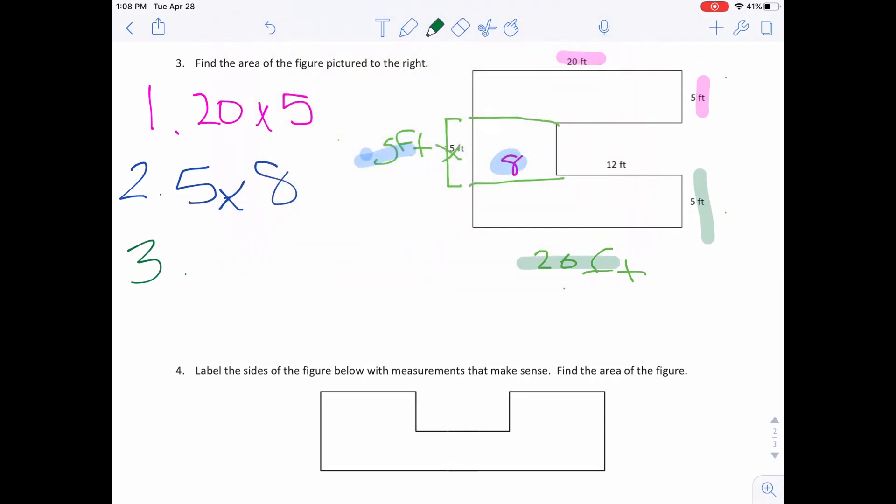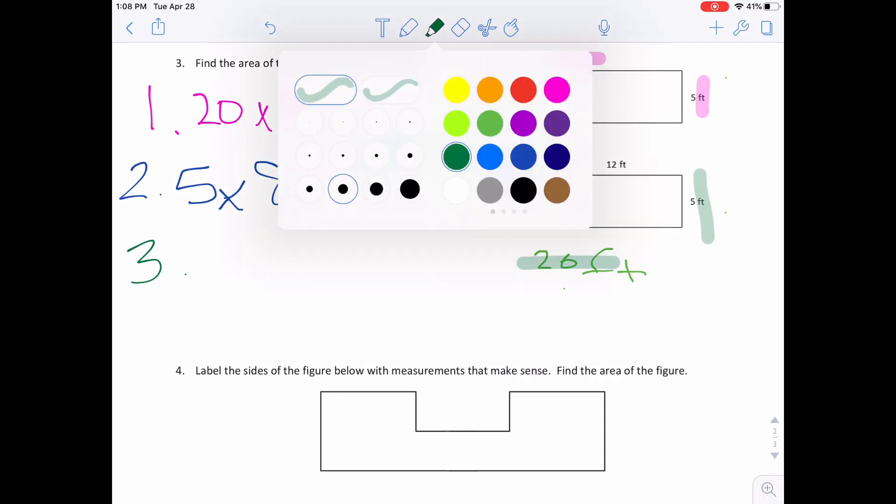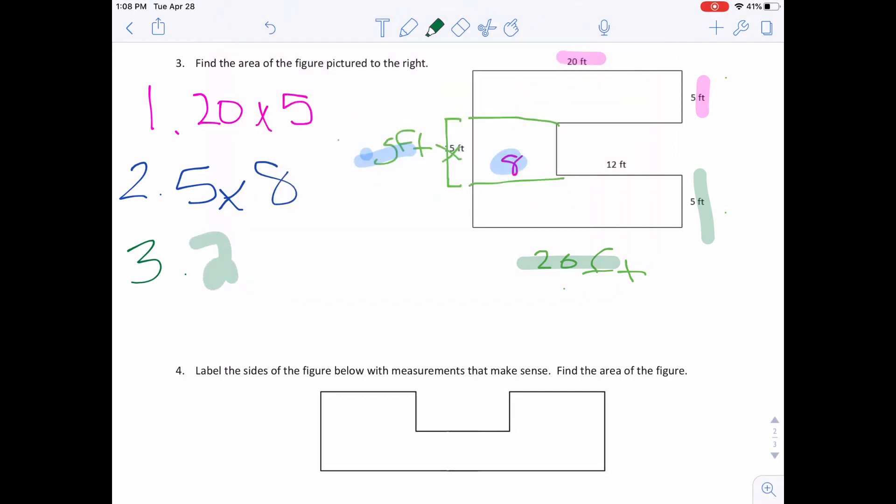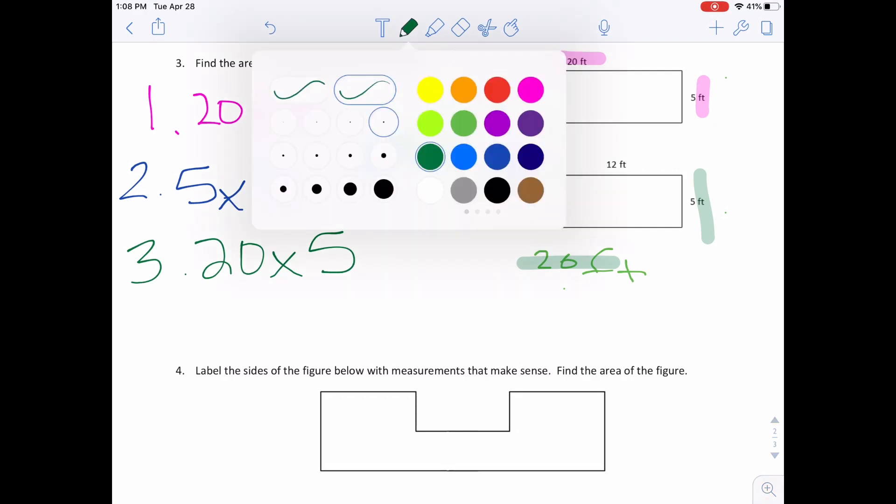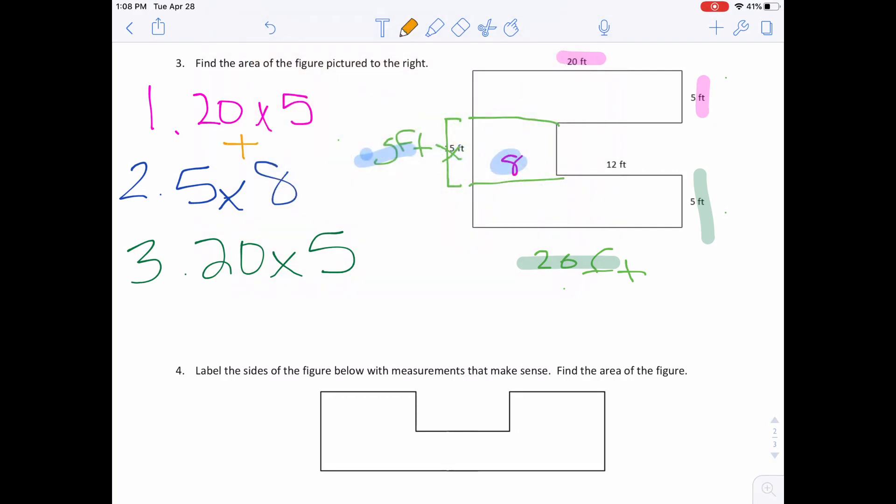We're going to do 20 times 5. To figure out the area of this next section, we are actually going to go 20 minus 12, which is 8. For number 2, it's going to be 5 times 8. For the third one, we're going to do 20 times 5. Right here, and the 5. Once we figure out 1, 2, and 3, we need to add them together. So once you get 20 times 5 equals, 5 times 8, and then 20 times 5 again, you're going to add them together. And that's going to be the square feet needed. We have to break it up into manageable chunks.